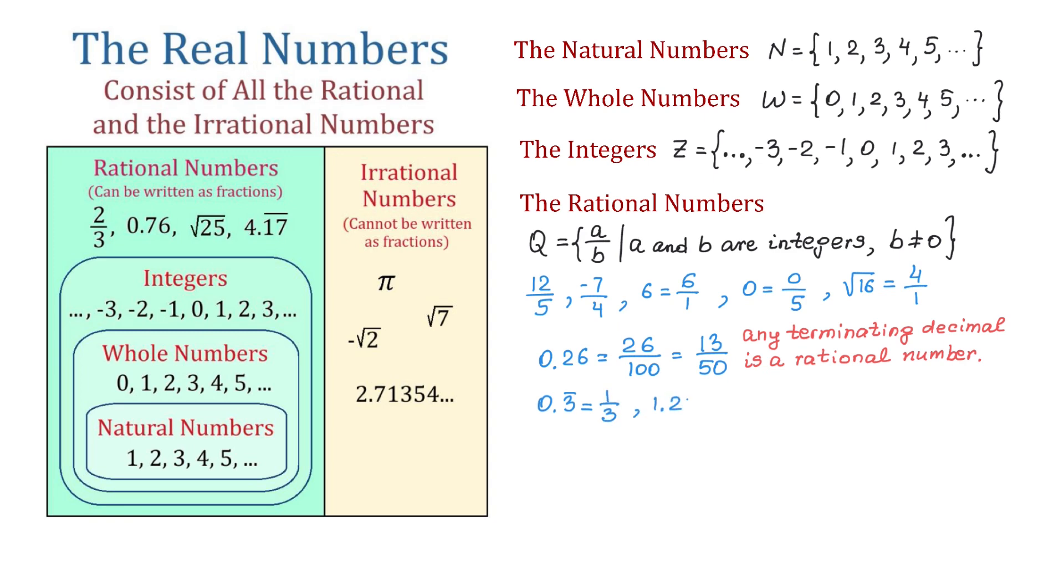1.25 repeating is also rational because we can write it as 124 over 99. So any decimal whose digits repeat is a rational number.